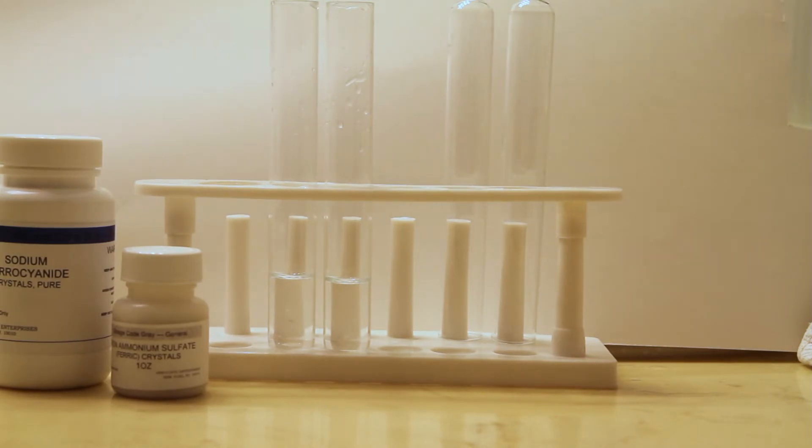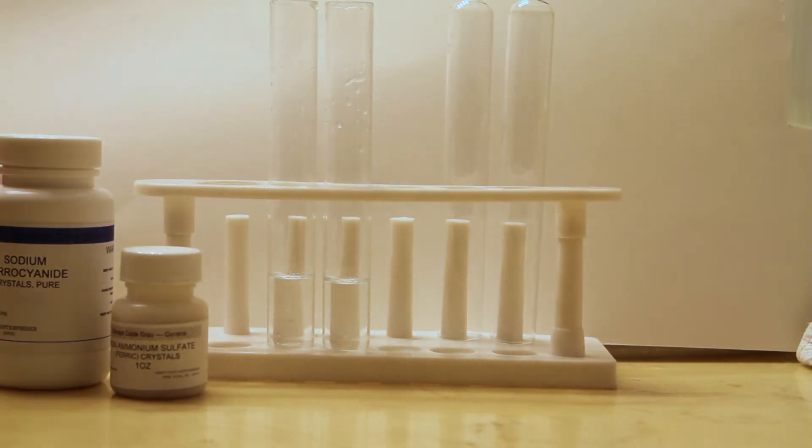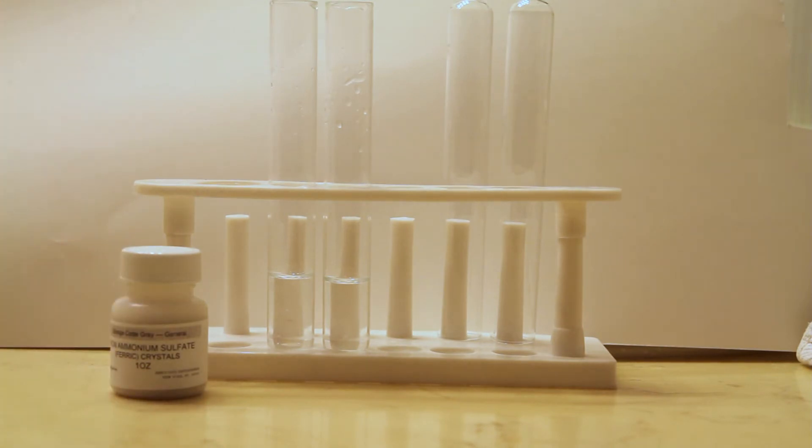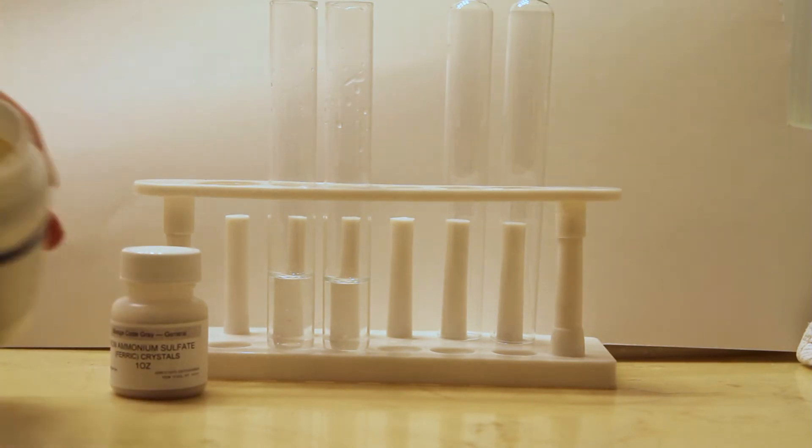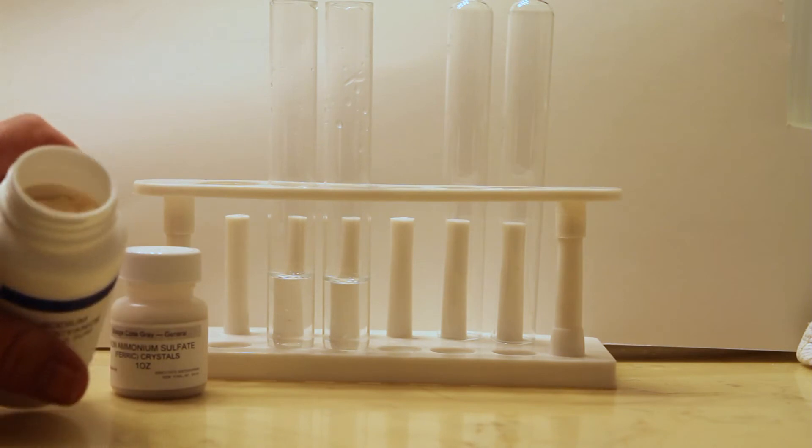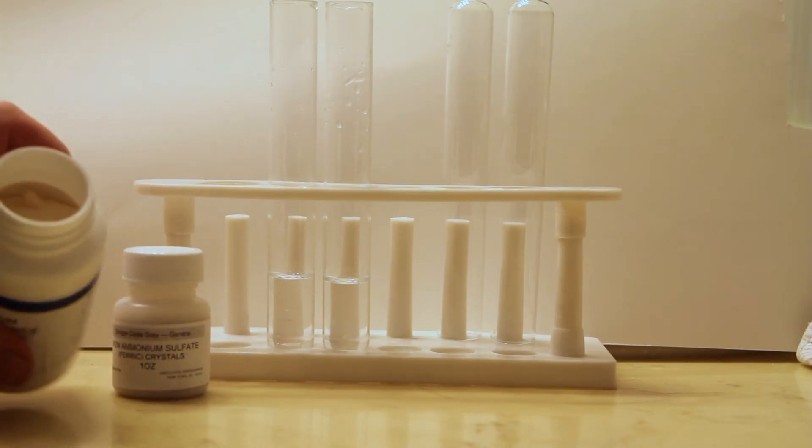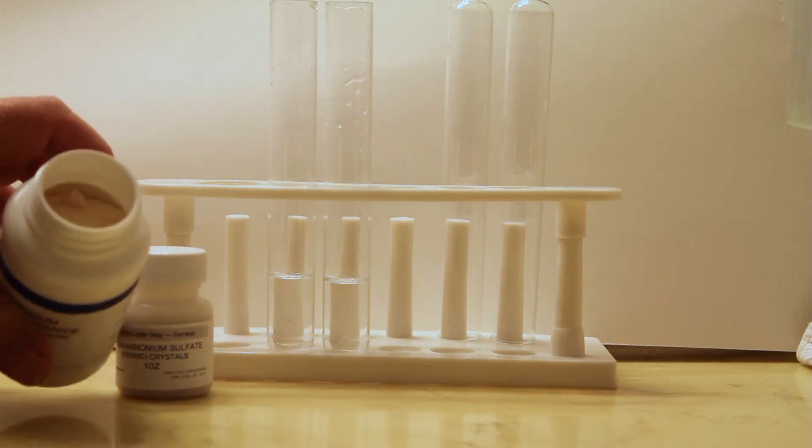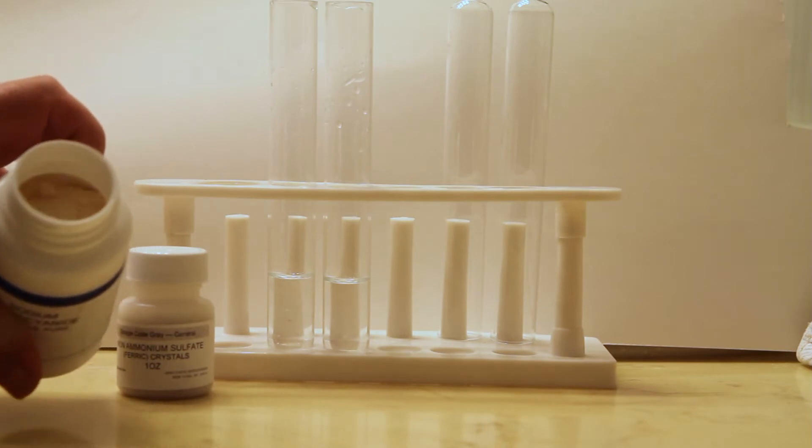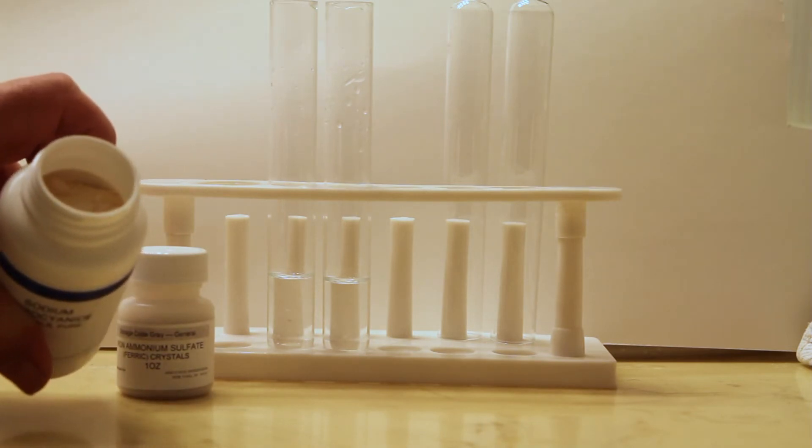We'll start with mixing a sodium ferrocyanide solution. You can see sodium ferrocyanide is not at all like the potassium ferrocyanide that TheChemLife had. It's actually more of a yellowish, kind of a pale yellow crystal.